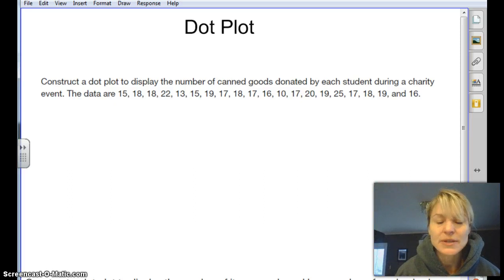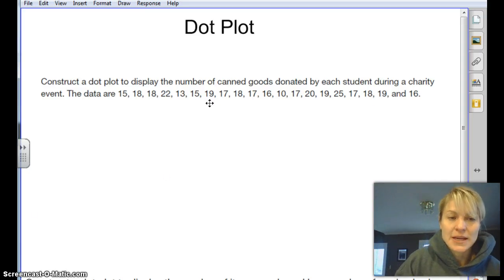So we're going to take our Olympic data and use several different graphical ways to represent them. This is part of our curriculum to learn how to do this and interpret it. One of the ways we're going to use our Winter Olympics data is to use a dot plot. That's really quite simple. We basically take a series of data like we have here. This one's the number of canned foods donated by each student during a charity event.